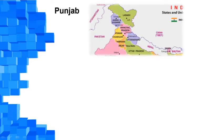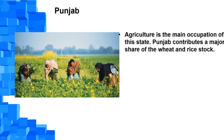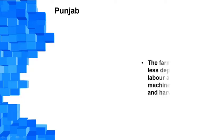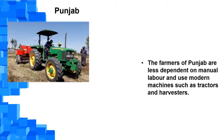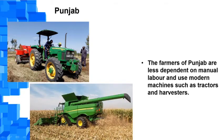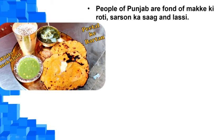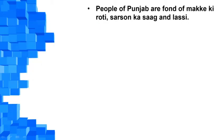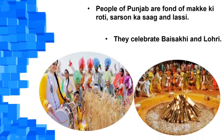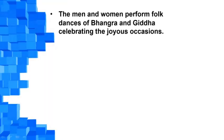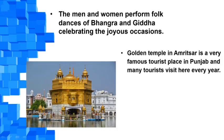Punjab is our neighboring state. Agriculture is the main occupation, and Punjab contributes a major share of the wheat and rice stock. The farmers of Punjab are less dependent on manual labor and use modern machines such as tractors and harvesters. People of Punjab are fond of Makke ki Roti, Sarson ka Saag and Lassi. They celebrate Baisakhi and Lohri. Men and women perform folk dances of Bhangra and Gidda. The Golden Temple in Amritsar is a very famous tourist place in Punjab.